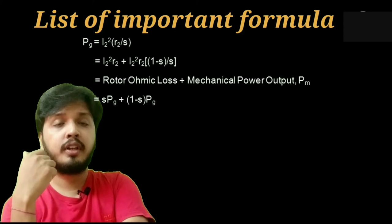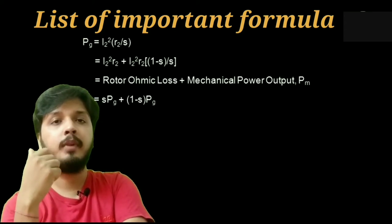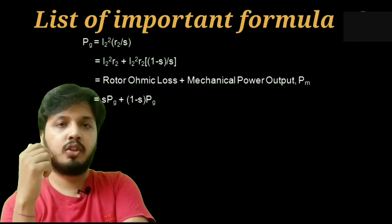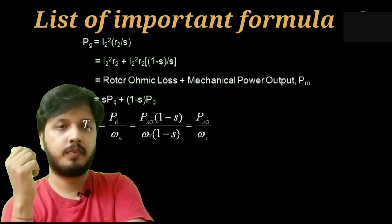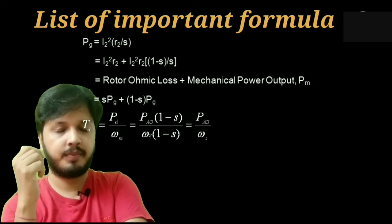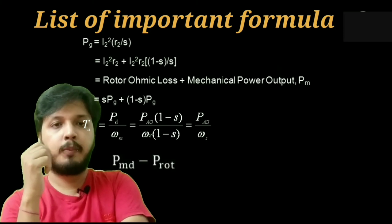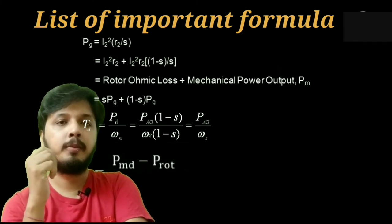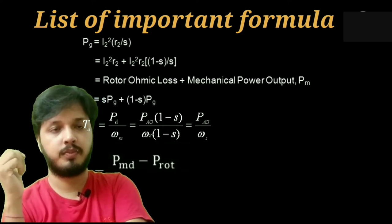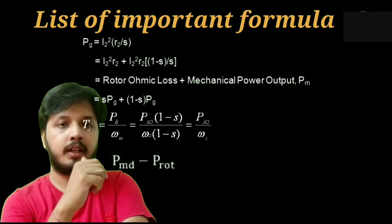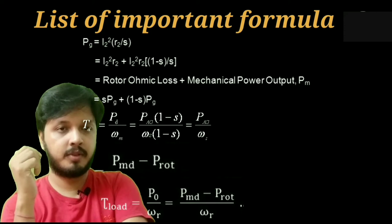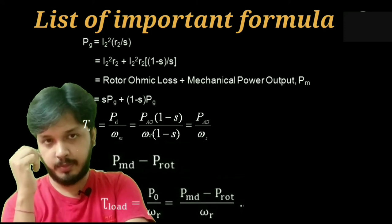Now if we denote air gap power with PG, then rotor copper loss will be s into PG. Developed mechanical power equals (1 minus s) into PG. Developed torque equals PG by omega S.